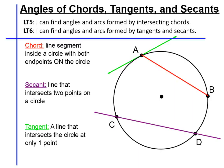This video is going to talk about the angles that are formed by chords, tangents, and secants as they interact with each other through a circle. Let's quickly review our learning targets. Learning target 5: I can find angles and arcs formed by intersecting chords. Learning target 6: I can find angles and arcs formed by tangents and secants.